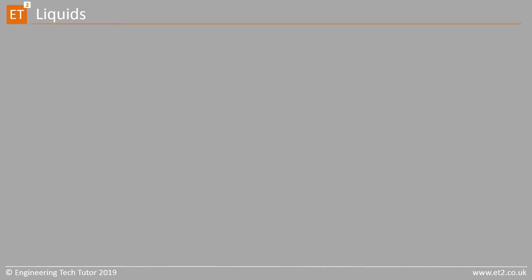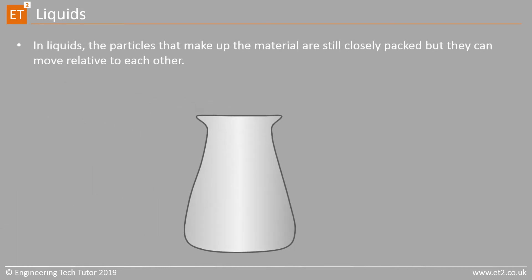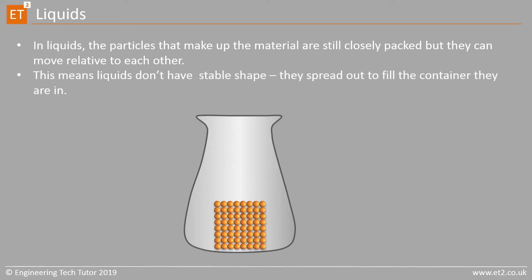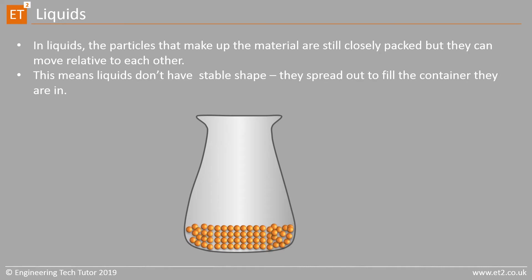Liquids are actually quite like solids. The particles that make up the material are still closely packed together, but unlike a solid, they can move relative to each other. This means that liquids don't have a stable shape — they spread out to fill the container they are in. However, just like a solid, a liquid cannot be compressed.